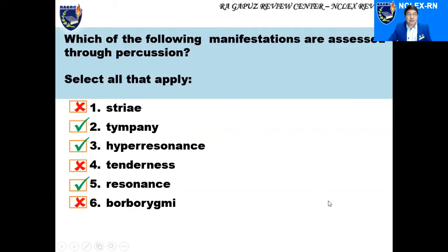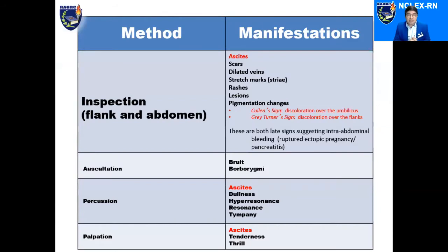To make this easier, let me share a table outlining the methods of assessment on the left and the manifestations assessable by each method on the right. For inspection of the flank and abdomen, you can assess ascites (associated with liver failure), scars, dilated veins (also associated with liver failure), stretch marks or striae, rashes, lesions, and — pay particular attention to this, highlighted in red — pigmentation changes like Cullen's sign, which is discoloration over the umbilical or peri-umbilical area.